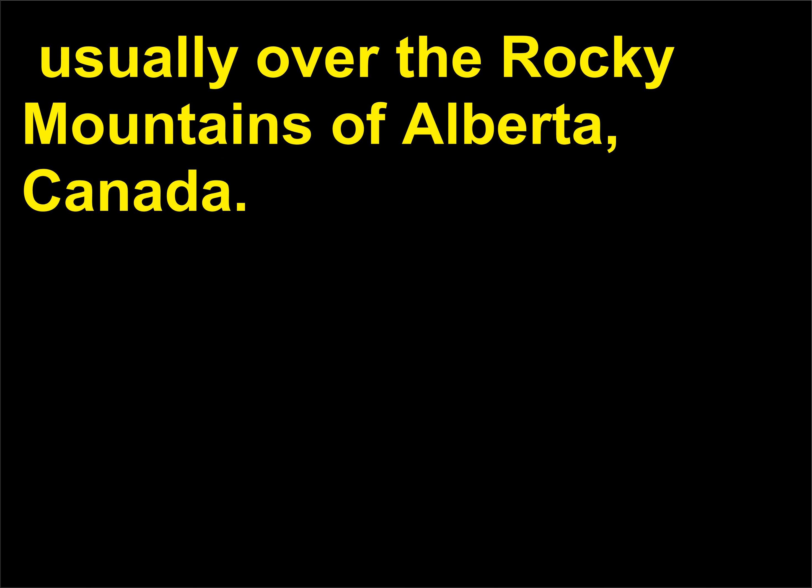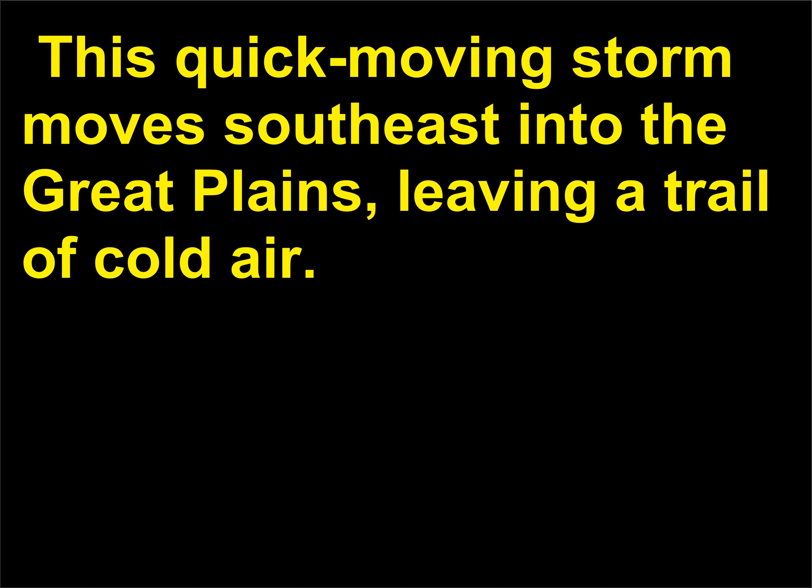What is an Alberta clipper? An Alberta clipper is a little gyrating storm that develops on the Pacific front, usually over the Rocky Mountains of Alberta, Canada. This quick-moving storm moves southeast into the Great Plains, leaving a trail of cold air.